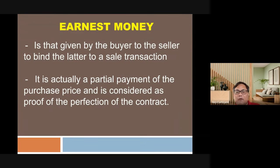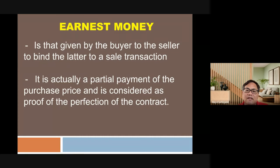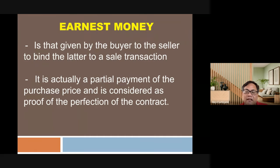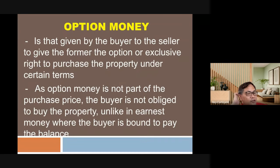Another concept frequently asked in board exams is earnest money — the amount given by the buyer to the seller to bind the latter to a sale transaction. It is actually a partial payment of the purchase price and is considered proof of the perfection of the contract. When you have earnest money, it is evidence that there is already a perfected contract.